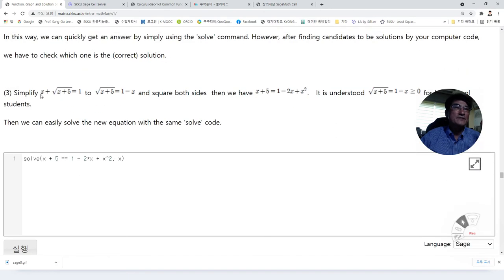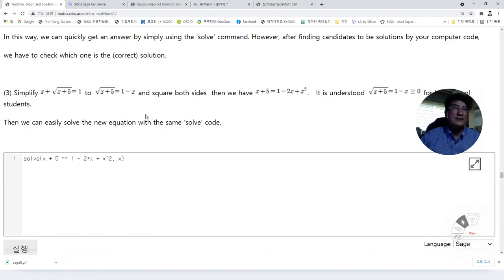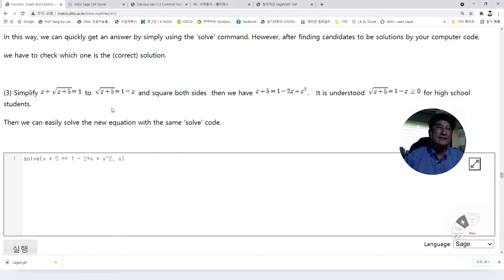For the next one, here we can try to use the solve command simply, but it may not give us the solution that we like to have. In that case, we may just simplify this. Isolate square root in one side like this. Move x to the right. Then square this equation on both sides. Then we have x plus y is equal to one minus two x plus x square. In here, it is understood that square root of x plus five, which is one minus x, is bigger than zero. That's what we have learned when we were young.